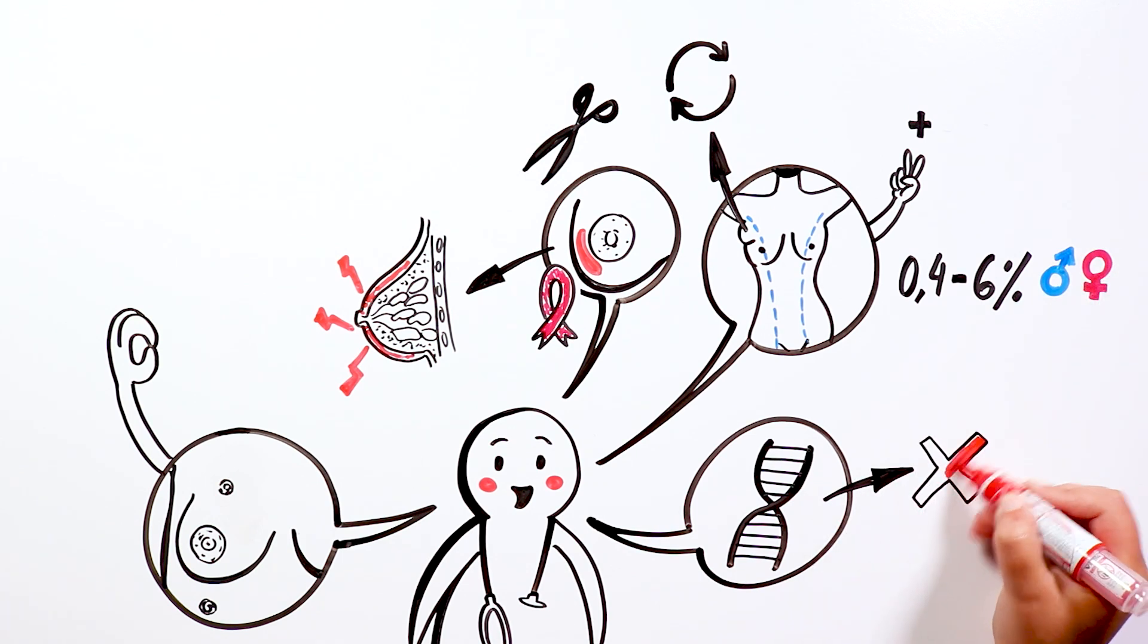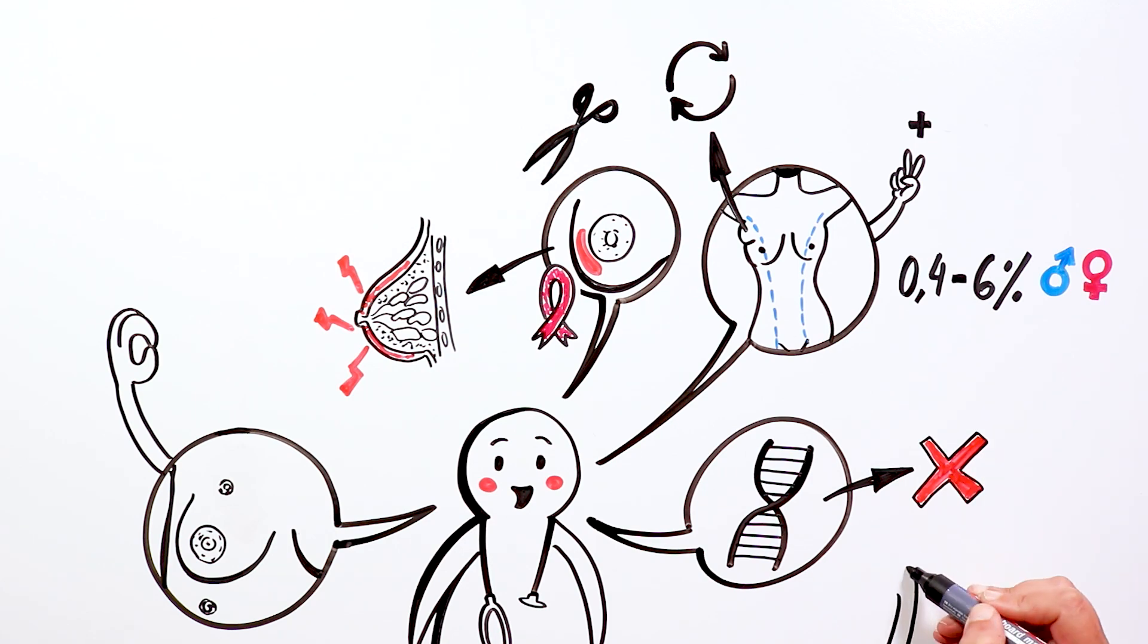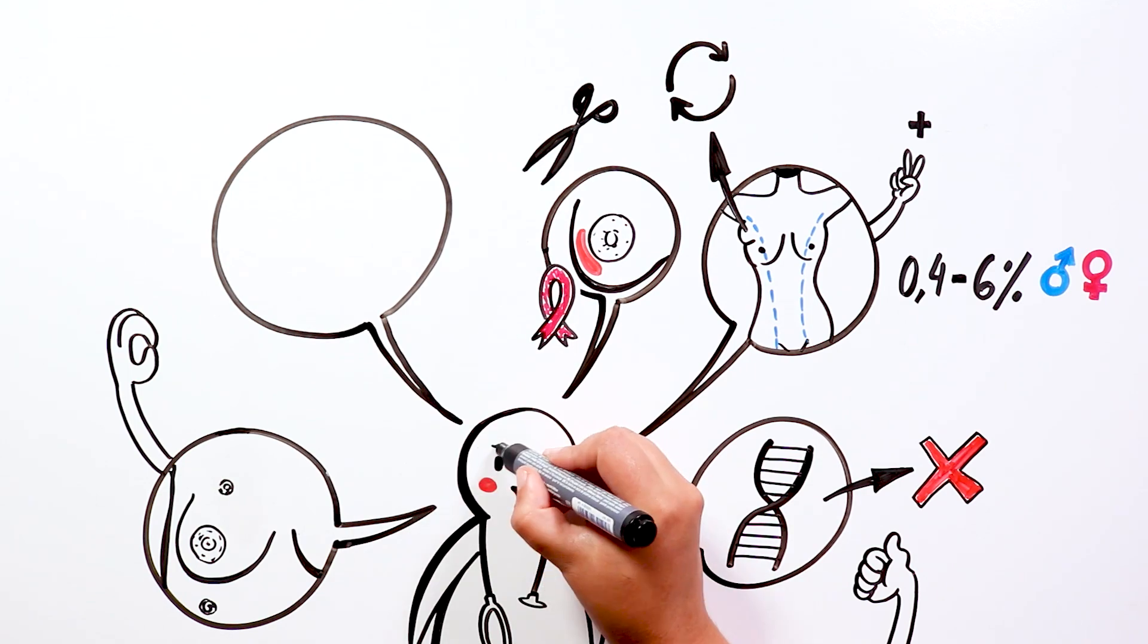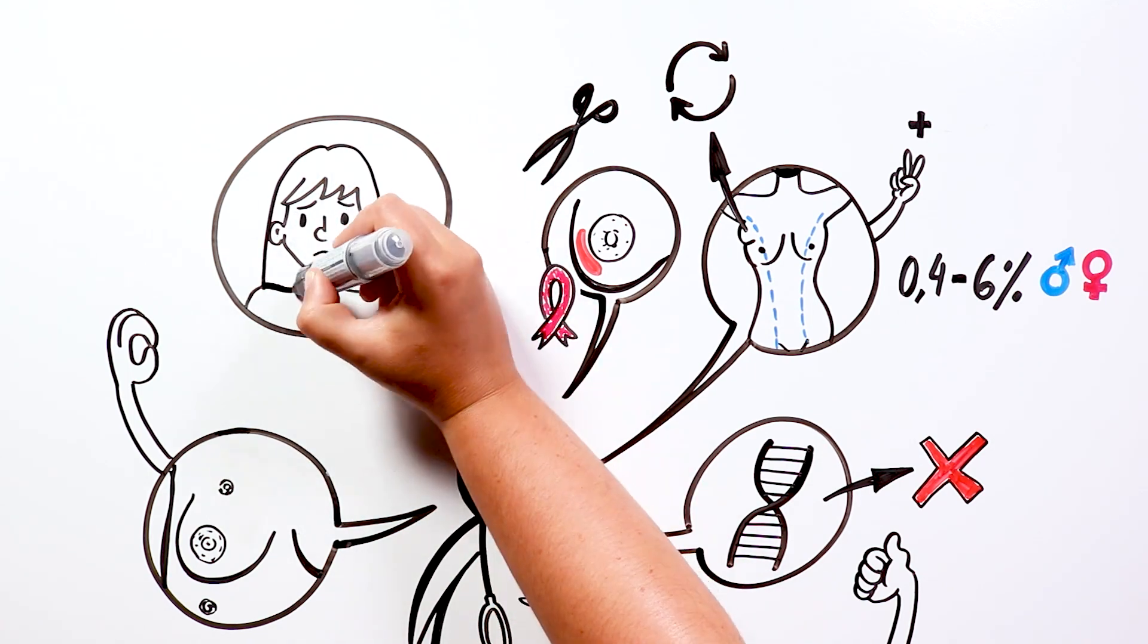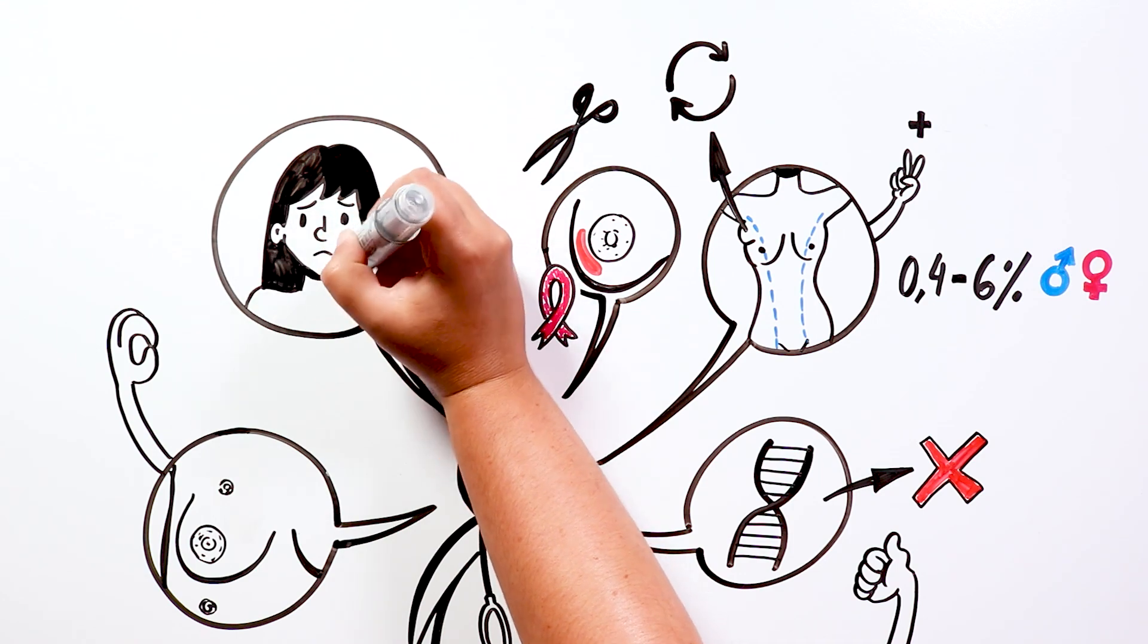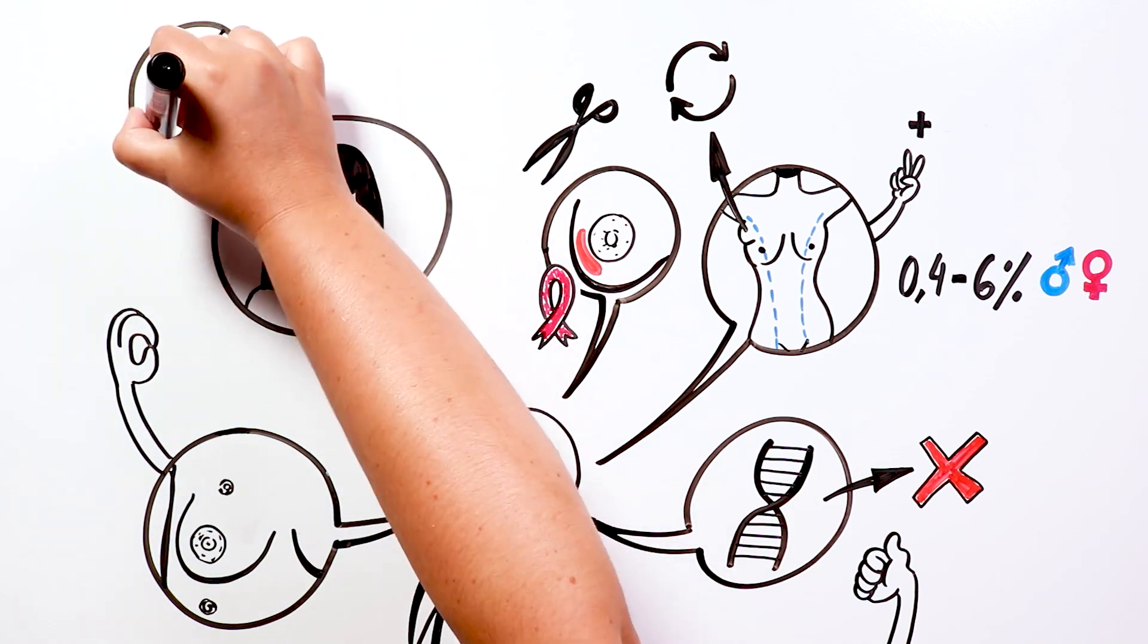Generally, both polymastia and polythelia are not serious disorders and are not associated with other problems. However, people who suffer from it tend to consider it an important aesthetic problem that affects their self-esteem, so they often ask doctors to perform surgery on them.